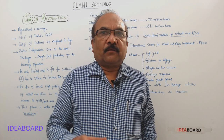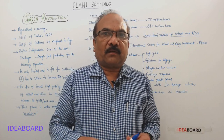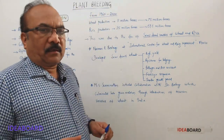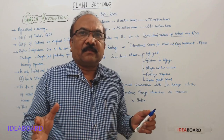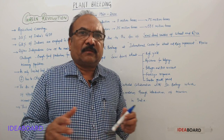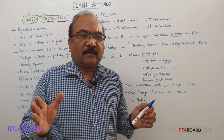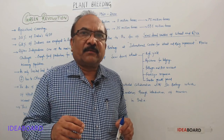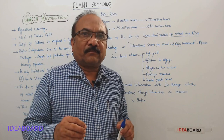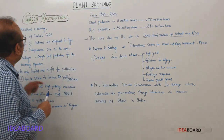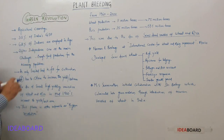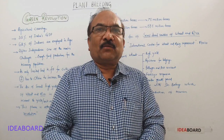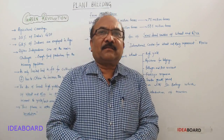Hello students. Today we are going to discuss the topic Green Revolution. We know that India is an agricultural country. Agriculture contributes about 33% of GDP — Gross Domestic Product. And remember, 62% of Indians are in the agricultural field, meaning they are getting employment through agriculture. That is why India is an agricultural country.